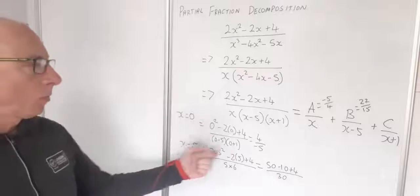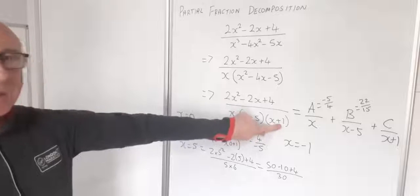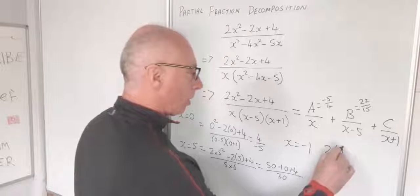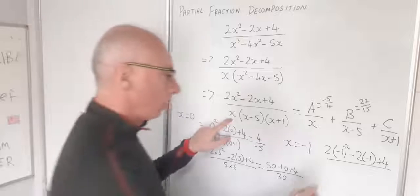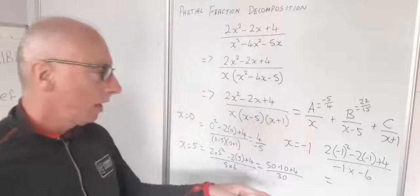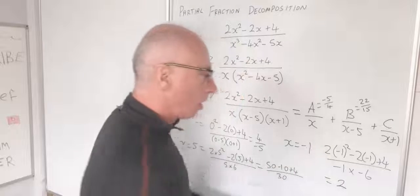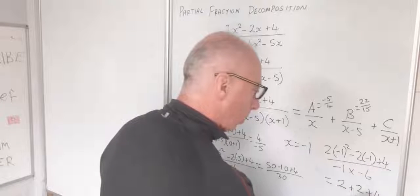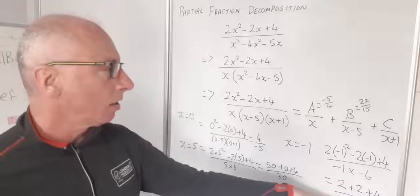Now for C, I use x equals minus 1. Plugging in: 2 times minus 1 squared minus 2 times minus 1 plus 4. Minus 1 squared is 1, so 2 times 1 is 2; minus 2 times minus 1 is positive 2; plus 4 gives a numerator of 8. The denominator with x plus 1 covered up: minus 1 times minus 1 minus 5 equals minus 1 times minus 6 equals positive 6. So C equals 8 over 6, which simplifies to 4 thirds.